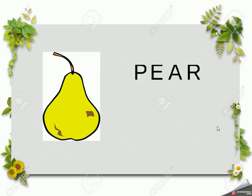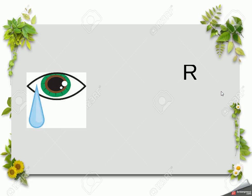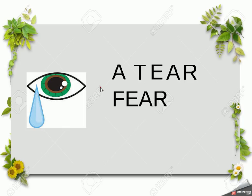Here we've got 'pair', so the E-A-R is being pronounced 'air'. When we see these three letters together it's 'air' — for instance we might 'wear' something, or we might come across a 'bear'. This is another use of E-A-R, but we don't say 'air', we say 'tear', so this time the E-A-R has become 'ear'. Whereas before it was 'wear' and 'bear', now it's 'tear', 'fear', 'near' — that E-A-R has become 'ear'.